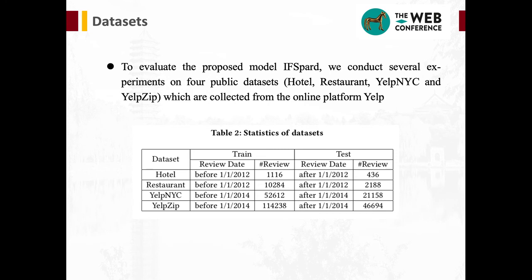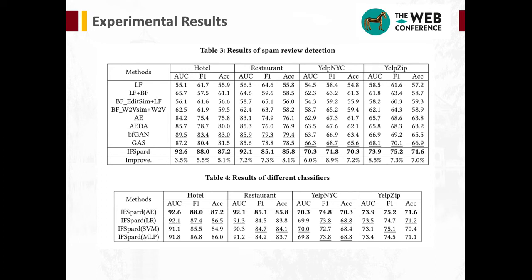To evaluate the proposed model IFSPART, we conduct several experiments on four public datasets collected from the online platform Yelp. Experimental results on the four datasets are shown in Table 3. We can observe that the proposed model IFSPART consistently outperforms all baseline methods on the four datasets. We also compare detection results of different classifiers in Table 4, and IFSPART with different classifiers consistently outperforms all baseline models, further proving the effectiveness of the framework.